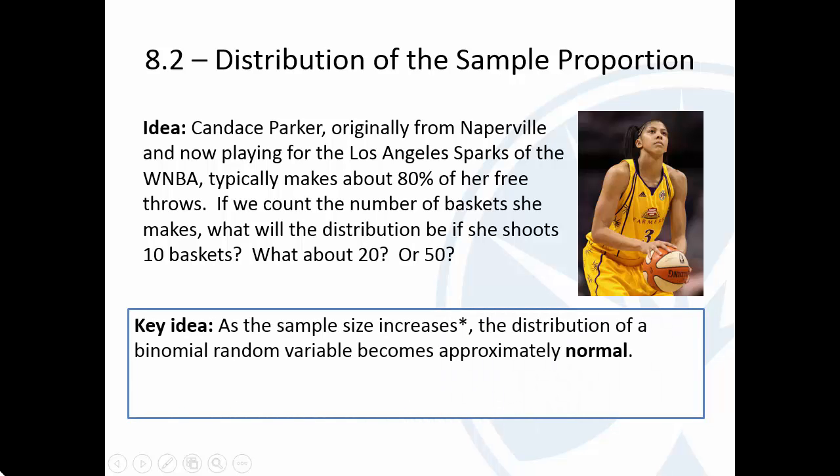There's a key idea: as the sample size increases, the distribution of this binomial random variable becomes approximately normal. The criteria here is that if you take n times p times 1 minus p, if that is at least 10, then the binomial random variable will be approximately normal.